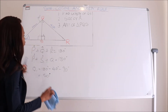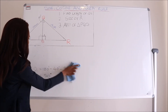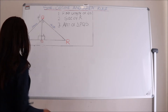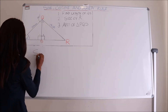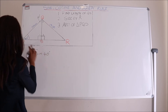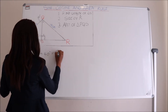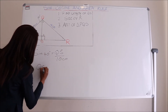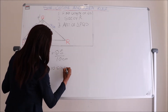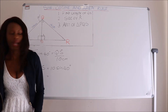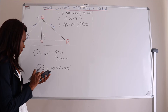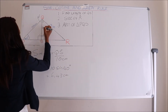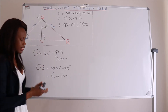Let's find the length of QS. Using the trigonometric ratio, we use sine of 40 degrees, which is the angle of P. It equals the opposite — which is QS — over the hypotenuse, which is 10 centimeters. So QS equals 10 times sine of 40 degrees. Using the calculator, that gives 6.43 centimeters. The length of QS is equals to 6.43 centimeters.